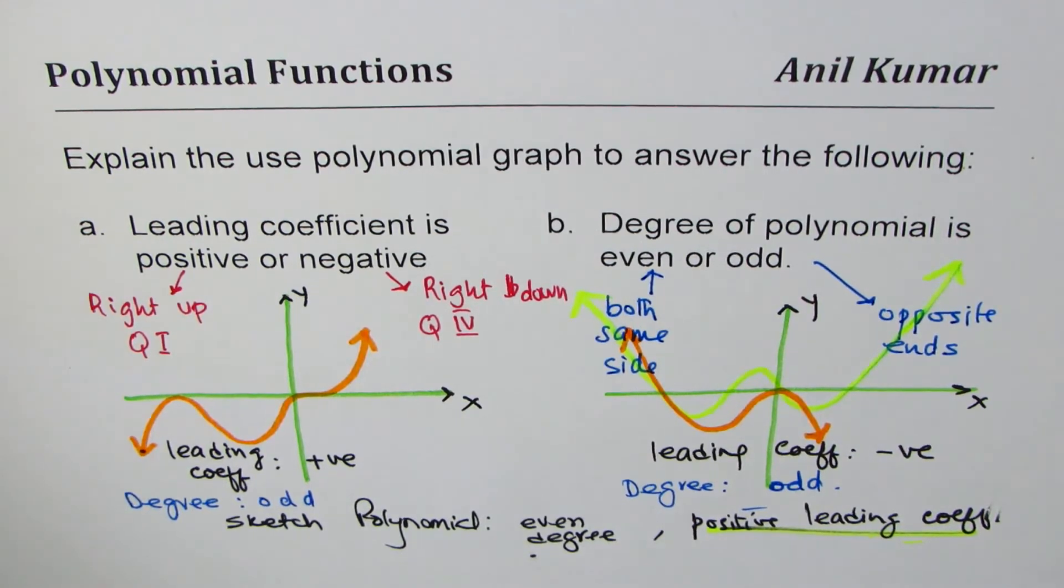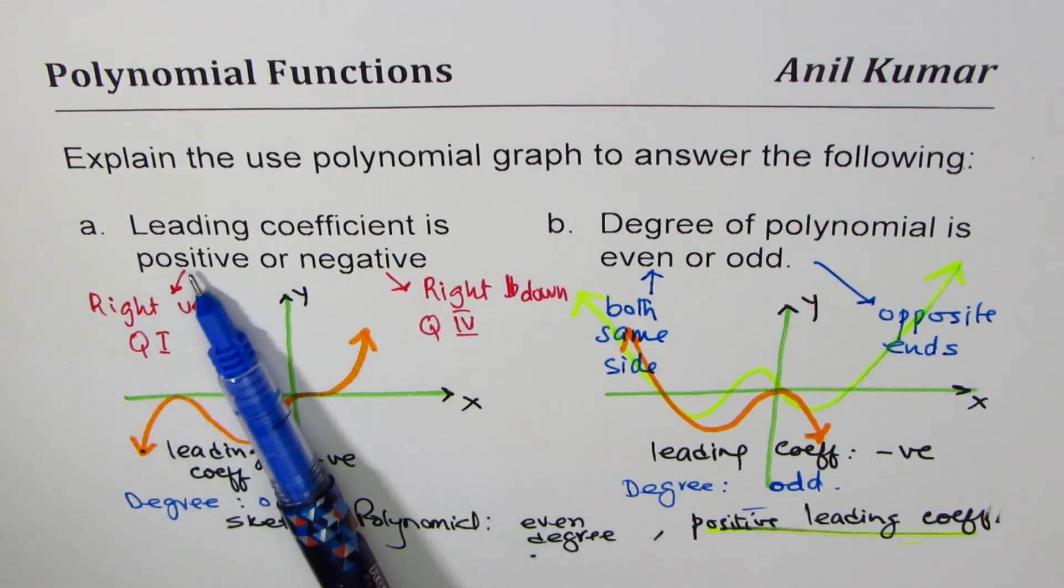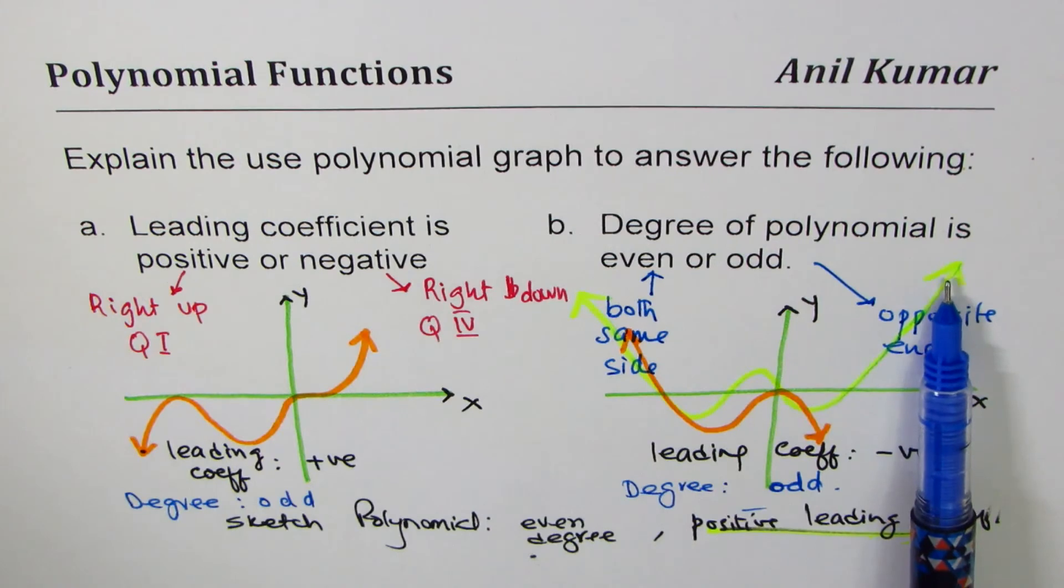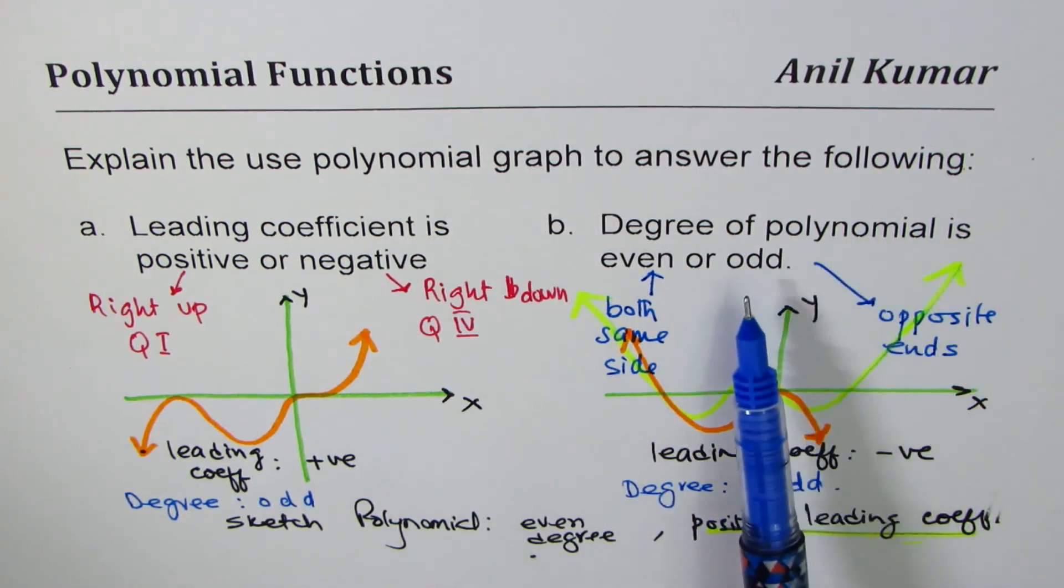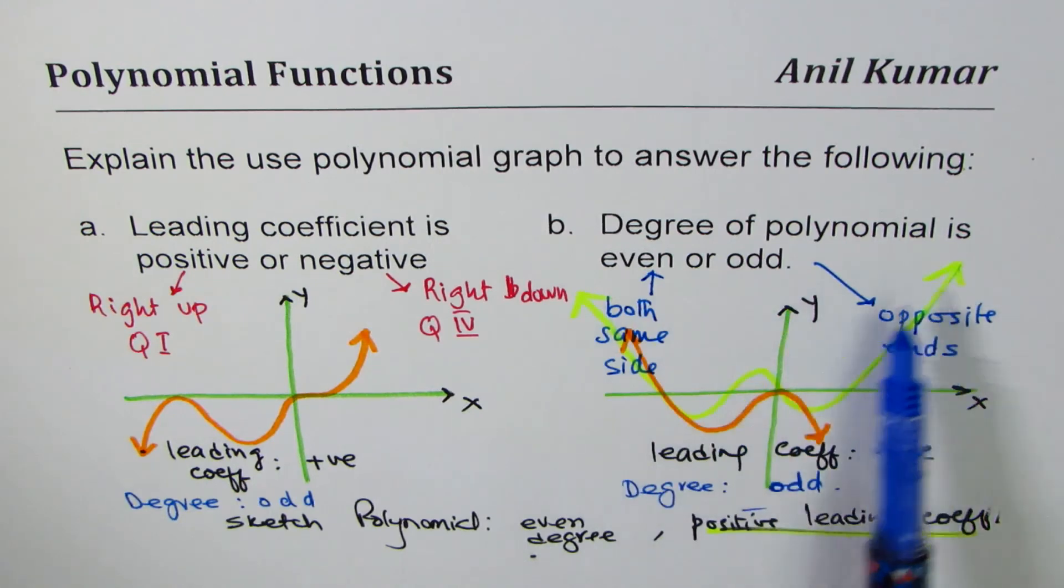Overall, I hope with this you've understood the concept that if the leading coefficient is positive, right side is going to be up. If leading coefficient is negative, right side is going to be down. And if the degree is odd, both are on the opposite sides. If the degree is even, both ends are on the same side of x-axis.